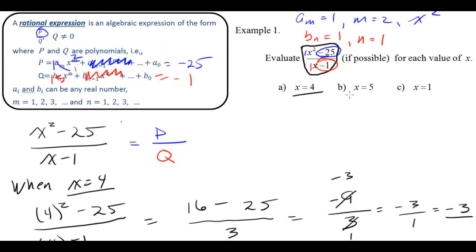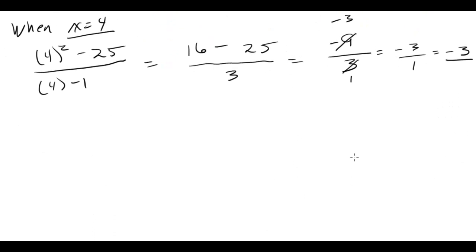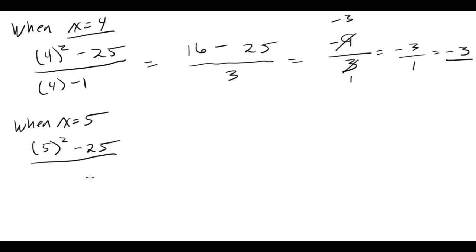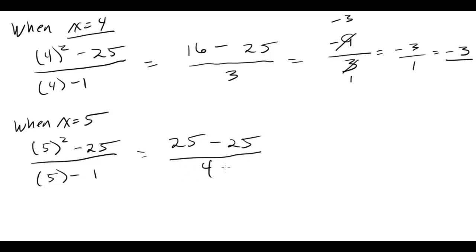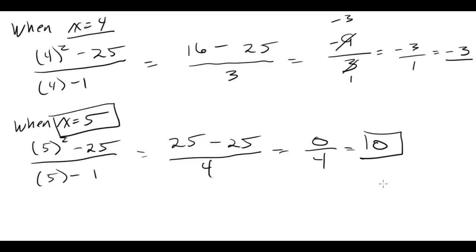Let's evaluate when x equals 5. We plug in: 5 squared minus 25 over 5 minus 1. 5 squared is 25, so that's 25 minus 25 over 4. 25 minus 25 is 0, over 4. It doesn't matter what's in the denominator — 0 divided by anything is 0. So when x equals 5, our rational expression goes to 0.